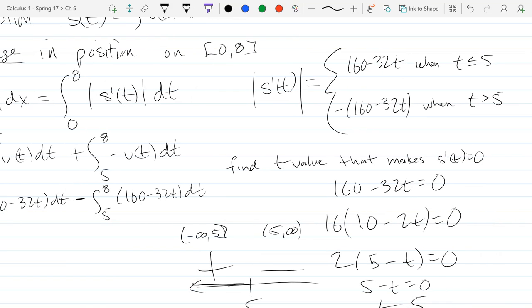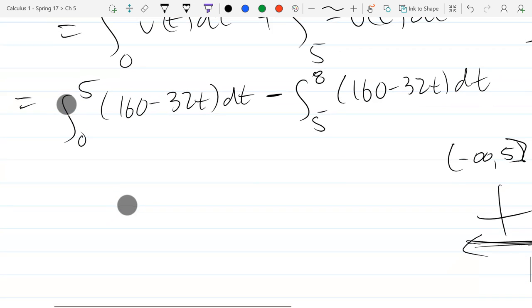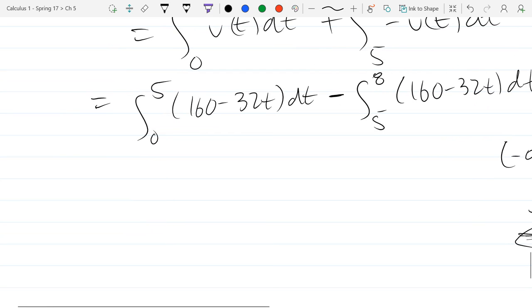We did the absolute value and split it into positive and negative parts. Now we're going to actually compute these two antiderivatives. The easy part is computing the antiderivatives. So we got 160 minus 32t. You're doing a t antiderivative, not x antiderivative, so you have to pay attention to that.